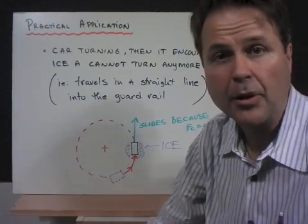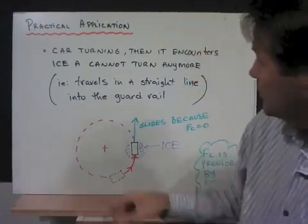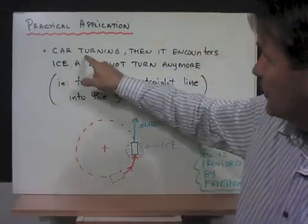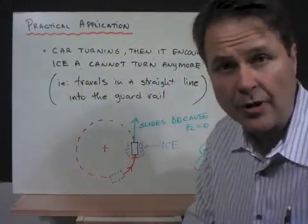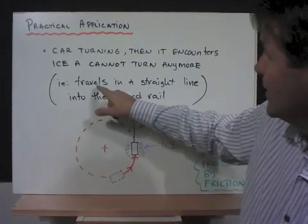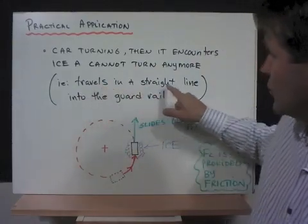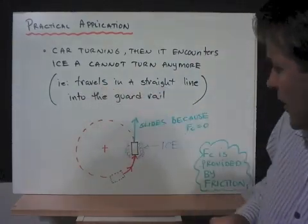Now let's talk about a practical application. So imagine a car turning. Car turning, then it encounters ice. It cannot turn anymore because of that ice. And that means it travels in a straight line into the guardrail.